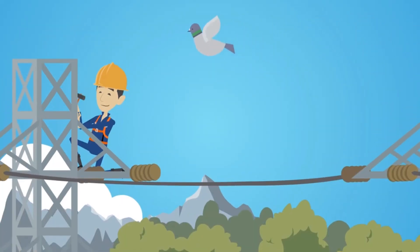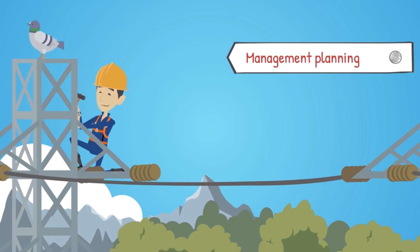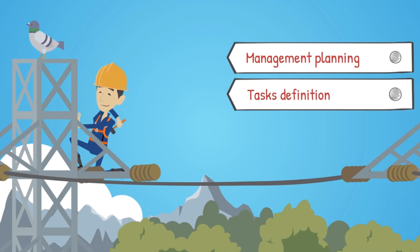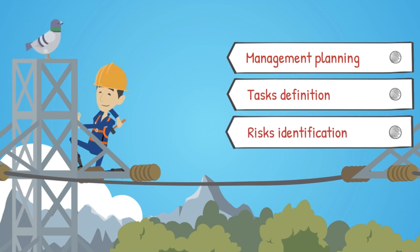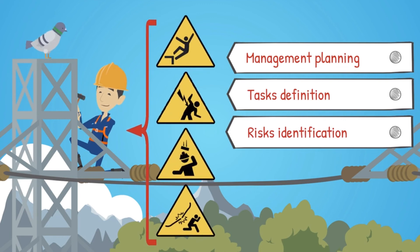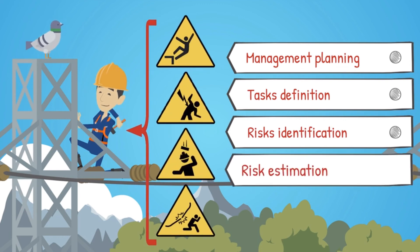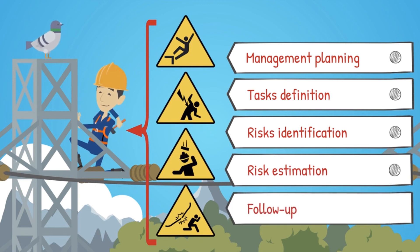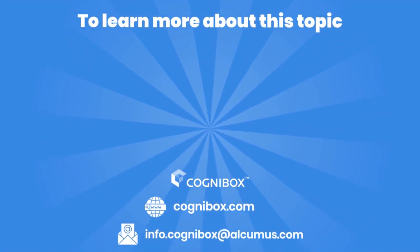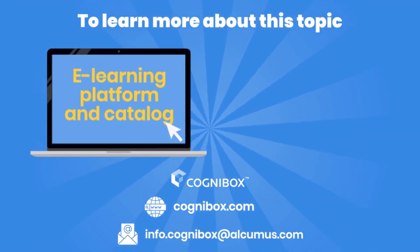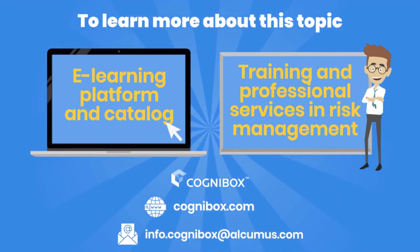To act on the risks, a 5-step approach to critical risk management has been developed. This consists first of planning this management, by defining the tasks to be accomplished and by assigning responsibilities. Then, the risks must be identified by making an inventory for the targeted workplace. Then, the risk level is estimated before proceeding to the implementation of control measures. Finally, a follow-up is made to ensure the implemented measures are appropriate. To learn more about this topic, please consult our e-learning platform and catalogue as well as our training and professional services in risk management.